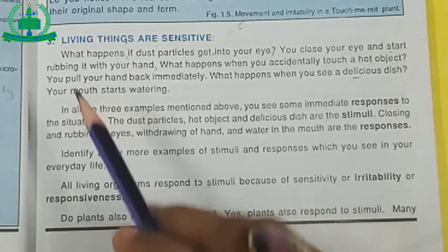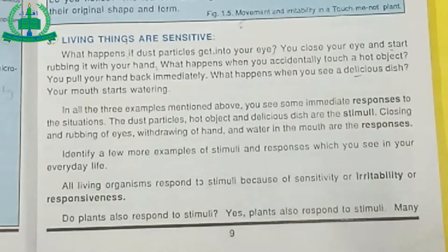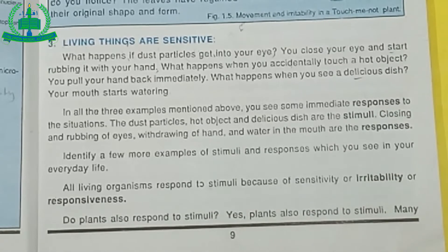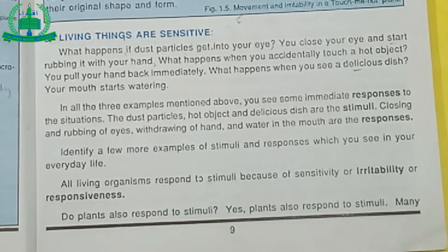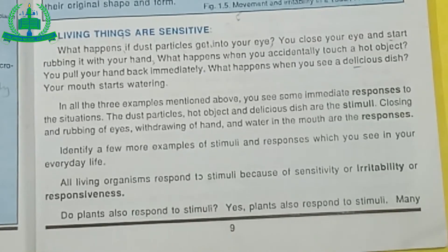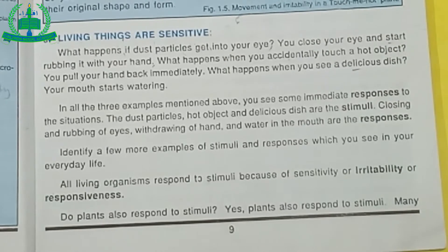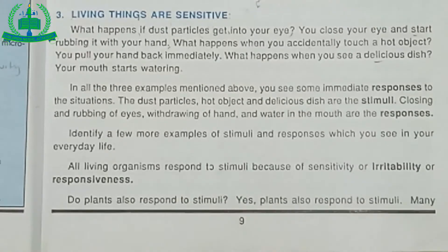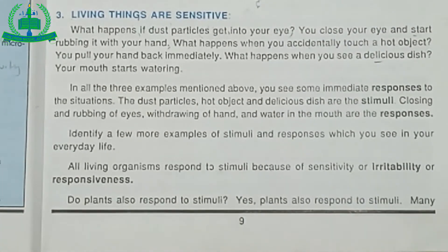The next point is: living things are sensitive. All living things respond to stimuli because of sensitivity. Some examples of stimuli are dust particles, hot objects, and a delicious dish. Plants also respond to stimuli, such as light, food, or touching. But non-living things and dead objects do not respond to stimuli.